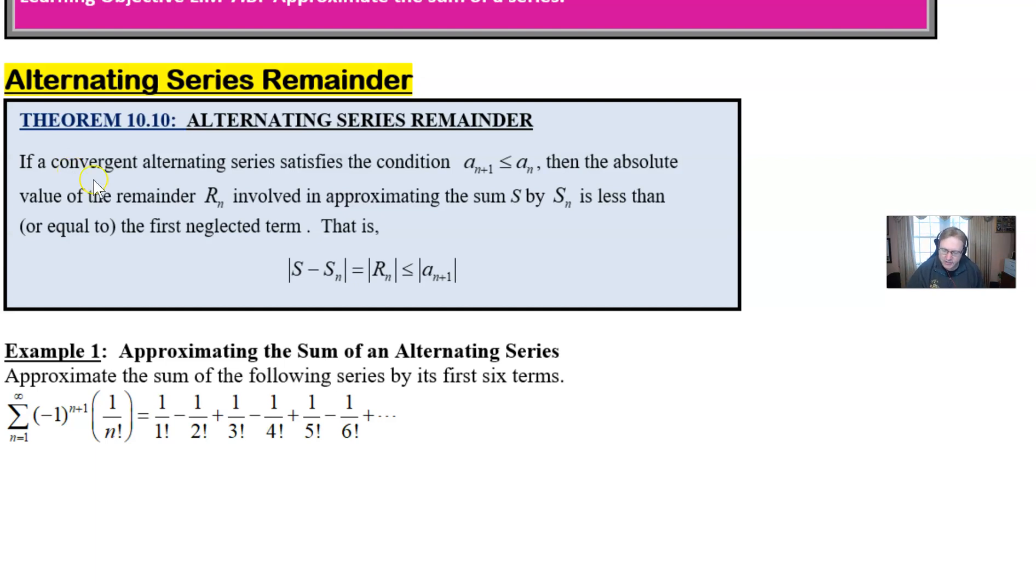So basically if we have a convergent alternating series that satisfies the condition that a_{n+1} is less than or equal to a_n, which that's the non-increasing symbolism there, then the absolute value of the remainder that we're going to call r sub n, that involves the approximation of the overall sum by using s sub n, the first n partial sums, is less than or equal to the first neglected term.